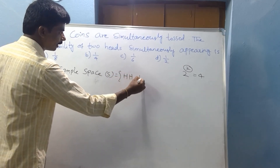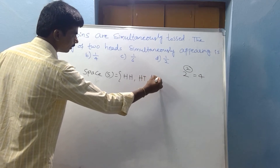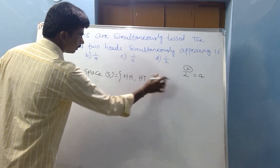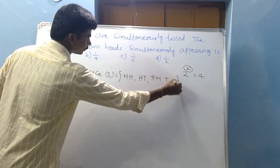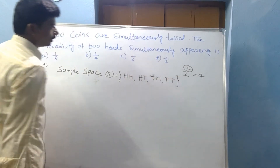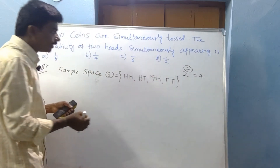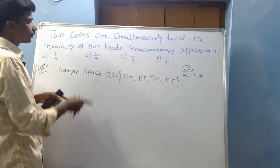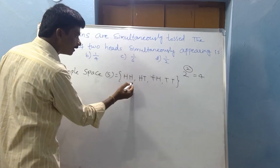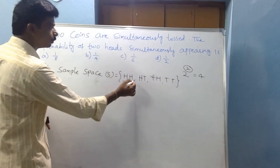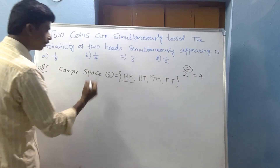The outcomes are: Head-Head, Head-Tail, Tail-Head, Tail-Tail. Two squared equals 4, so two coins tossed give 4 outcomes. Now, probability of two heads simultaneously — this is two heads simultaneously appearing here.